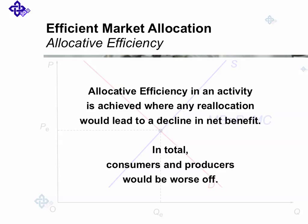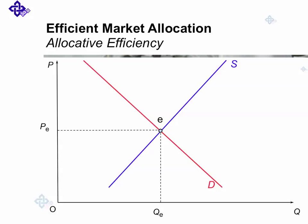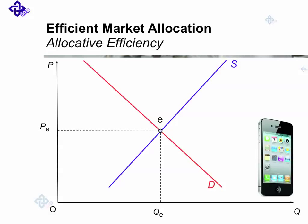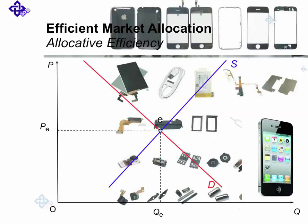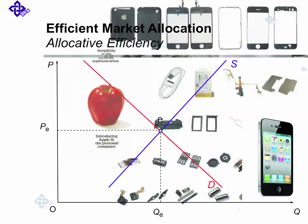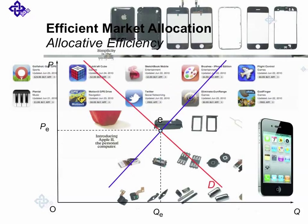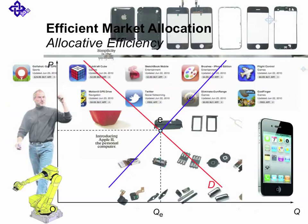Allocative efficiency in an activity is achieved where any reallocation would lead to a decline in net benefit — in total, consumers and producers would be worse off. Now, if not only the market for iPhones was in equilibrium, but also the markets for its parts, for advertisement, for applications, for jobs, and for capital.